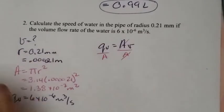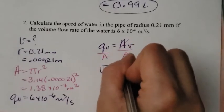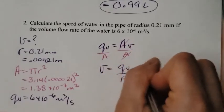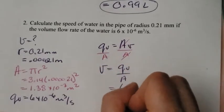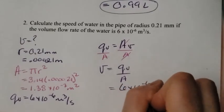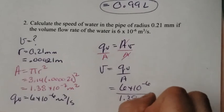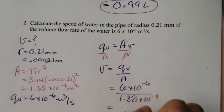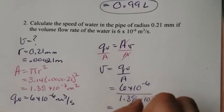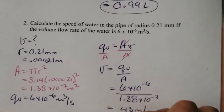I'm left with speed equals QV over A. QV is 6 times 10 to the negative 6. The area was 1.38 times 10 to the negative 7. When I put that into my calculator, I end up with 43 meters per second.